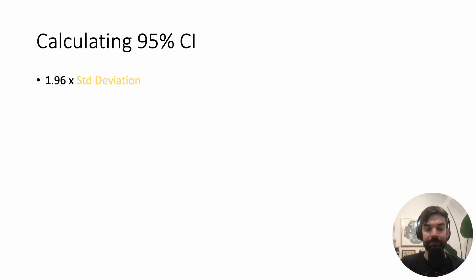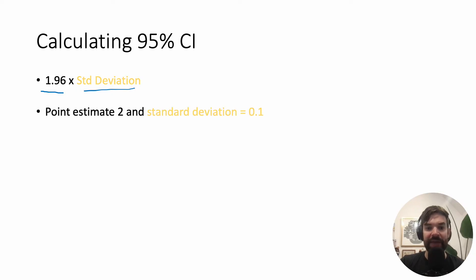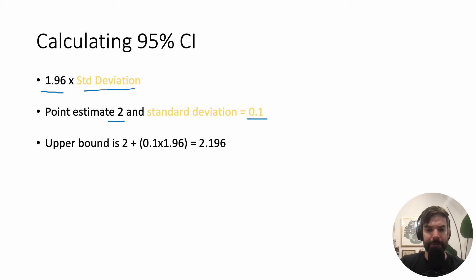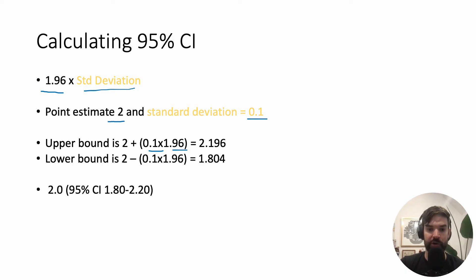To calculate the confidence interval, you do 1.96 times the standard deviation. For example, if the point estimate is 2 and the standard deviation is 0.1, the upper bound is 2 plus 0.1 times 1.96. You do the same in the opposite direction for the lower bound. And then you have your point estimate as well as your 95% confidence interval.